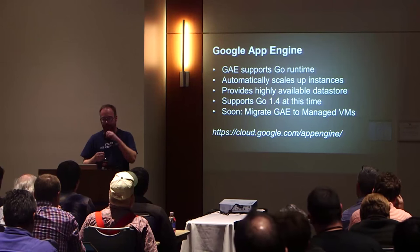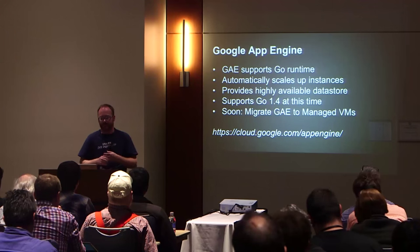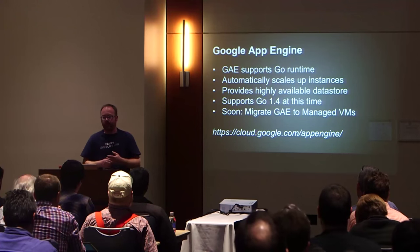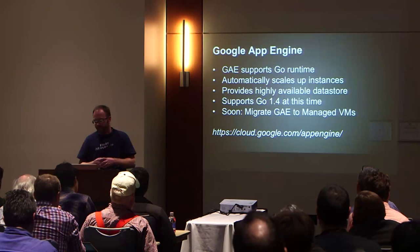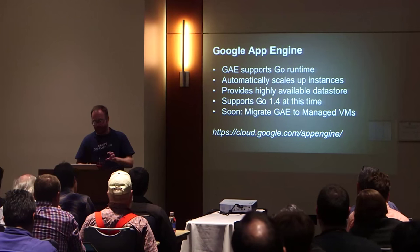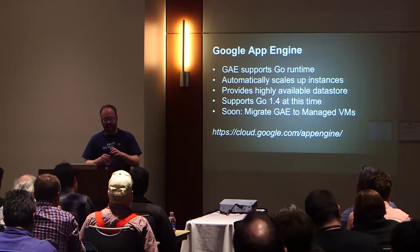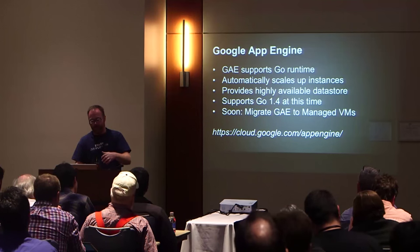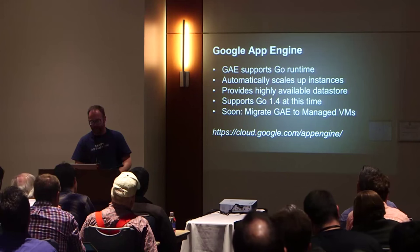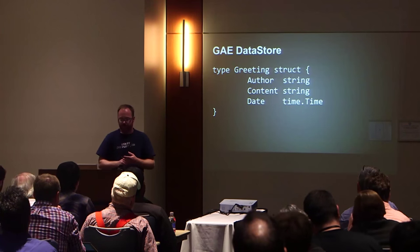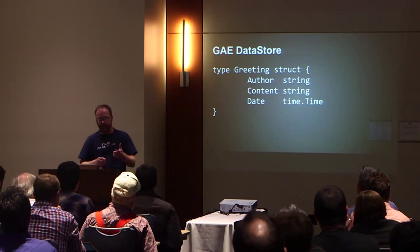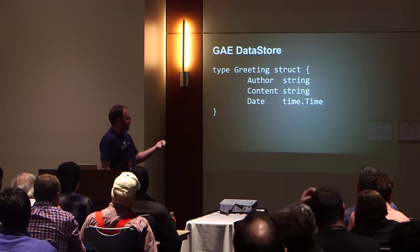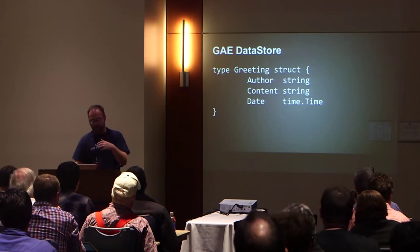What you get with App Engine is automatic scaling of instances as demand increases, a highly scalable datastore you can easily use inside your Go program — highly replicated across multiple data centers automatically — and memcache support built in, among other things. Here's a quick example of storing a Go structure in the Google App Engine datastore. You have a structure much like what we had for the iterating-over-things-in-a-template example, and then some quick code that fetches them out of the datastore.